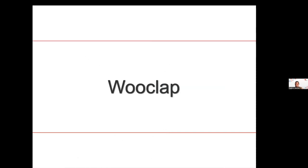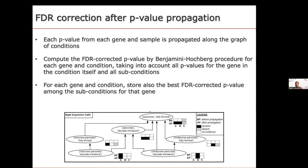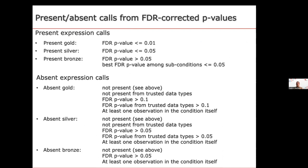What we propagate is the p-value. For each library, each sample, and each gene, we provide a p-value of expression significance. These p-values are propagated in the ontology, and at the end we perform FDR correction of all these p-values to get one single answer: is my gene significantly expressed in this condition? By integrating thousands of p-values and applying FDR correction, we give one single answer: yes, this gene is significantly expressed with this FDR-corrected p-value. We then give a presence or absence call based on this FDR p-value, with three levels of confidence: gold, silver, and bronze.